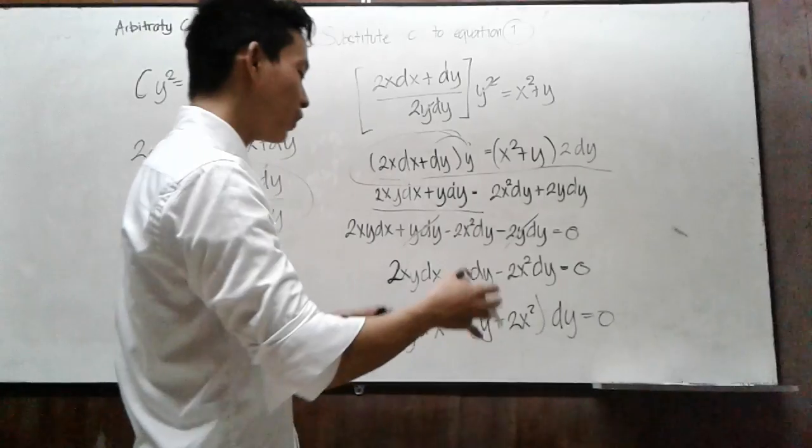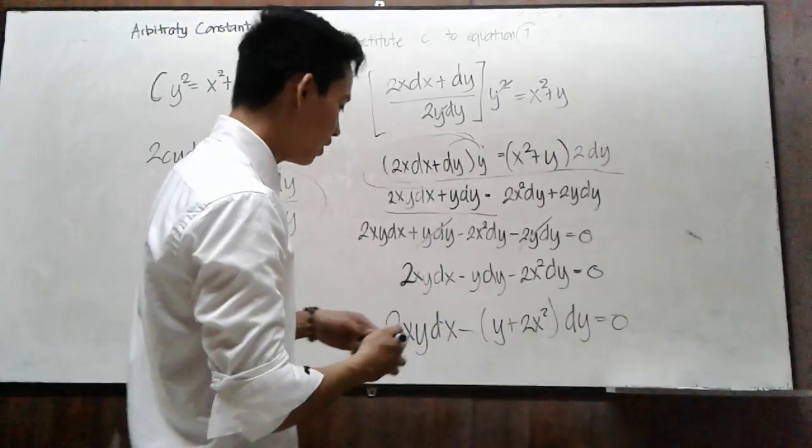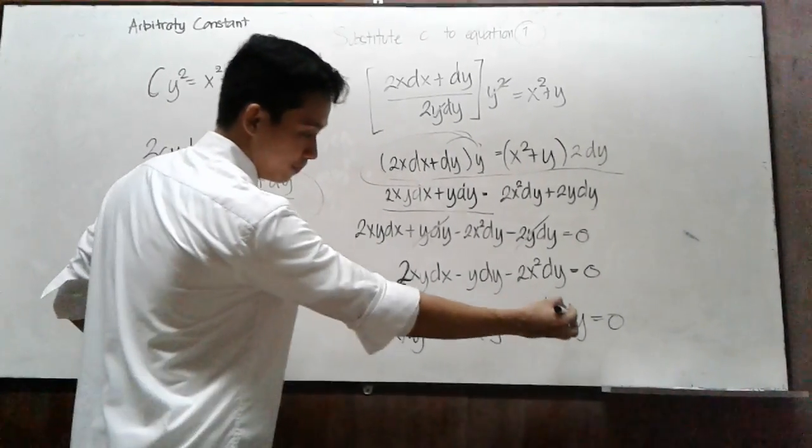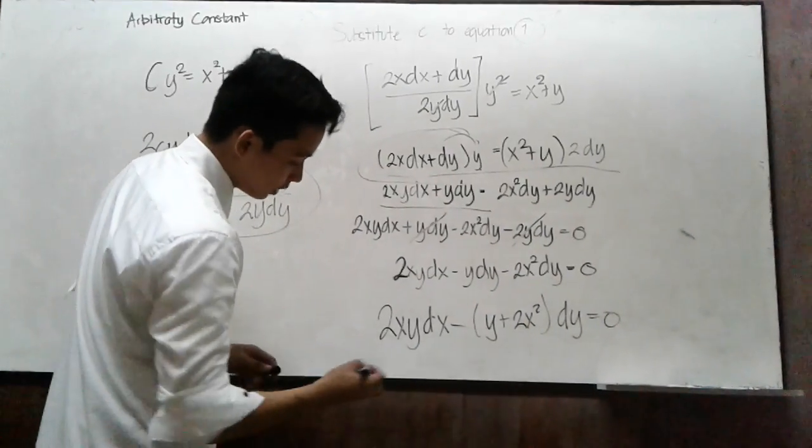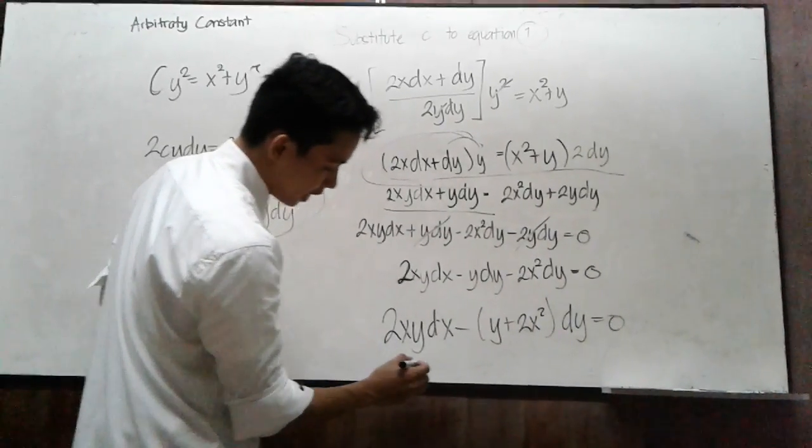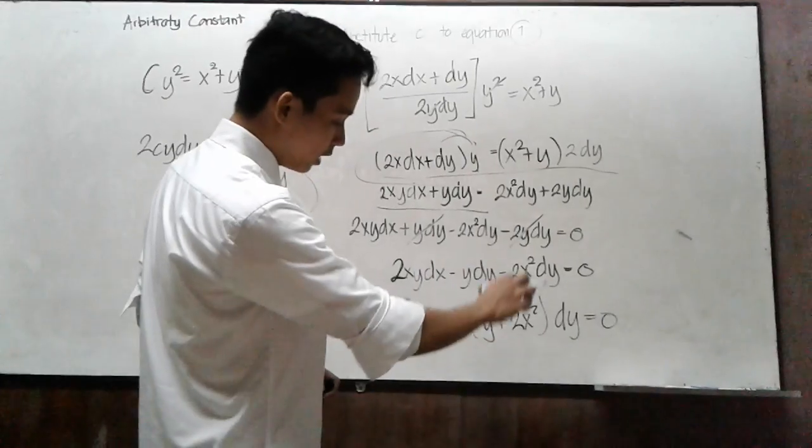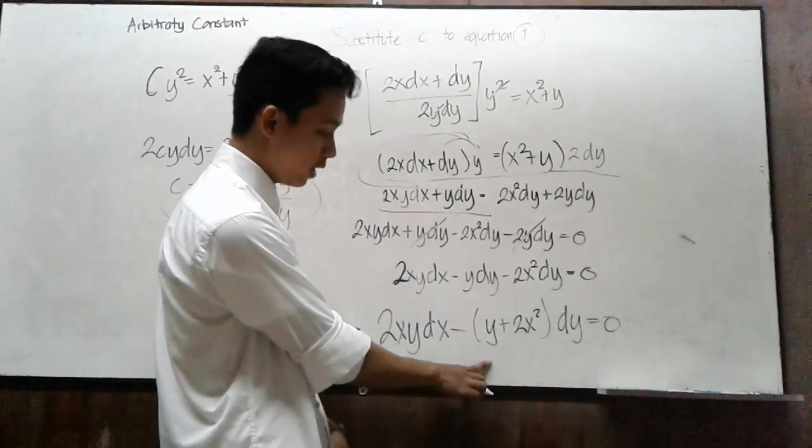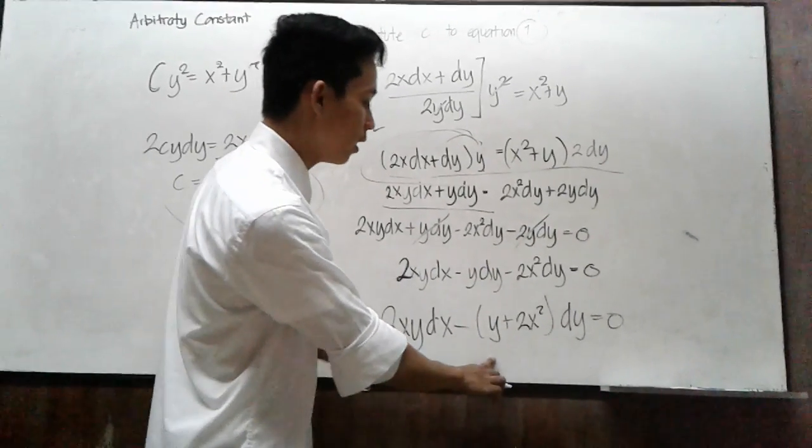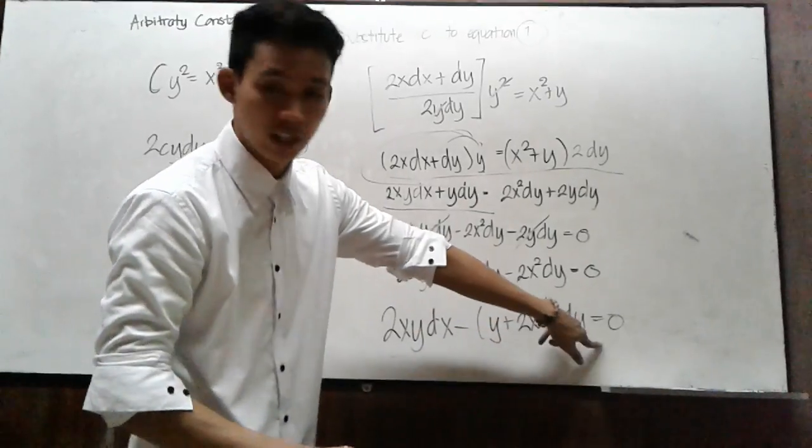To factor out like terms, simply factor out negative dy. So the final answer is 2xy dx minus open parenthesis y plus 2x squared close parenthesis dy equals 0.